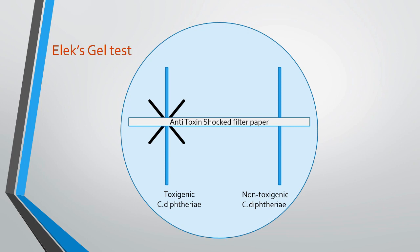If the culture isolate does not have toxin production, then there will be no toxin-antitoxin interaction and no line of precipitation, as shown in the culture line plated on the right side of the plate.